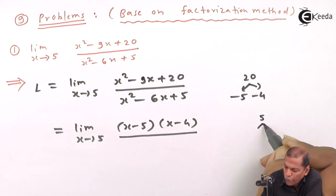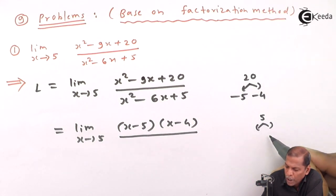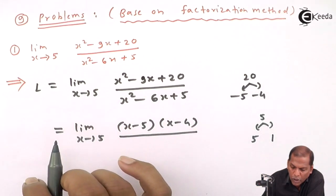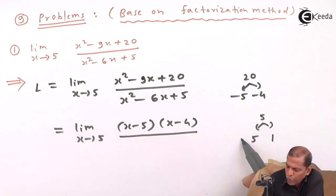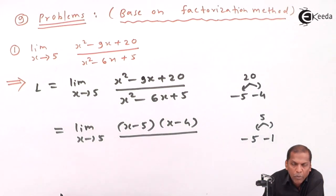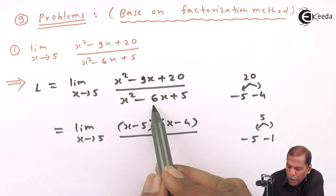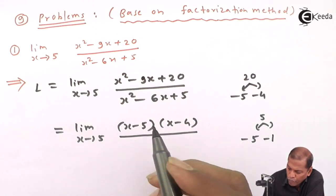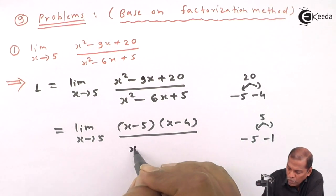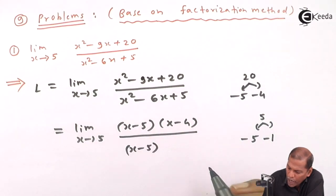In the denominator, the last term is 5. We have to factorize 5 in such a way that we get 6 in the middle term. Now 5 can be written as 5 times 1. The middle term has a minus sign, so we put -5 and -1. The factors for x² - 6x + 5 equals (x - 5)(x - 1).